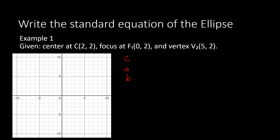Let's start off with the center. The center is given at (2,2). If we try to plot that on the coordinate plane, we have that point here. We are going to locate the focus at F(0,2), so F(0,2) is here. This is our focus, this is our center, and then we have (5,2) as the vertex, so we have that one here. This is our vertex.